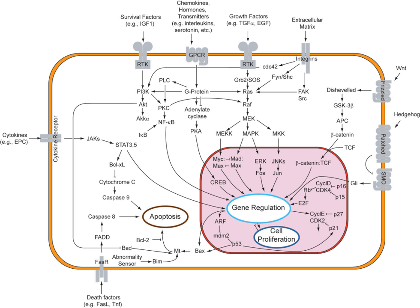Signaling within, between, and amongst cells is subdivided into the following classifications. Intracrine signals are produced by the target cell and stay within the target cell. Autocrine signals are produced by the target cell, are secreted, and affect the target cell itself via receptors. Sometimes autocrine cells can target cells close by if they are the same type of cell as the emitting cell — an example of this are immune cells.